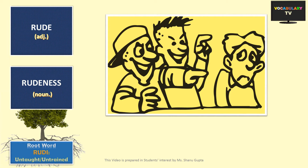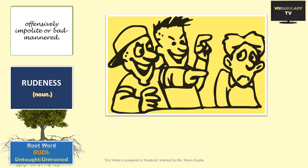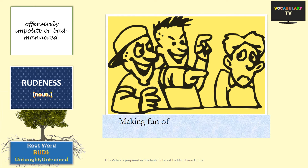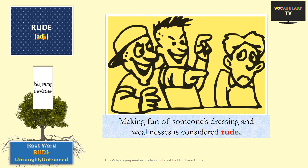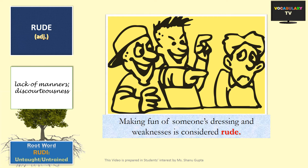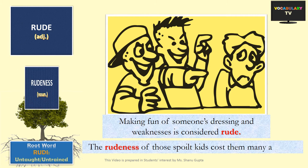The next word is 'rude'. This word is closer to the actual meaning of the root word. If someone is untaught and untrained, he or she will lack manners — to the extent that sometimes he or she would be offensively impolite or bad-mannered to other people, which is what the word means. It is mostly used in a negative sense. For example, making fun of someone's dressing and weaknesses is considered rude or impolite. The related noun is 'rudeness', meaning lack of manners or discourteousness. An example sentence would be: the rudeness of those spoiled kids caused them many a friend.